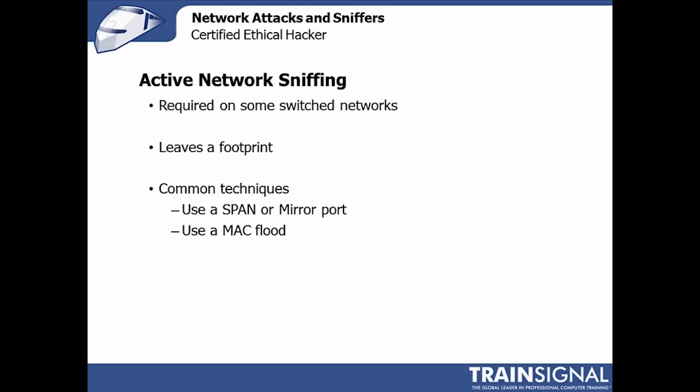The most common technique that won't destroy anything or alert administrators to our presence is to figure out whether there are any mirror ports or span ports — essentially a port on a router or switch that sends all the traffic from one port to a different port. For example, if the target I'm trying to listen in on is on port 8 and I'm on port 7, I tell the switch to send all traffic for port 8 over to port 7. Some switches make this easy; others make it nearly impossible. Finding a mirrored port makes your attack and sniffing effort much easier.